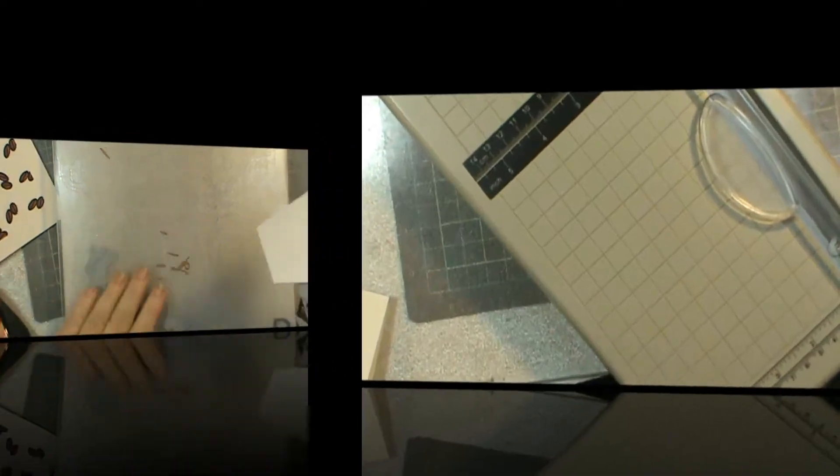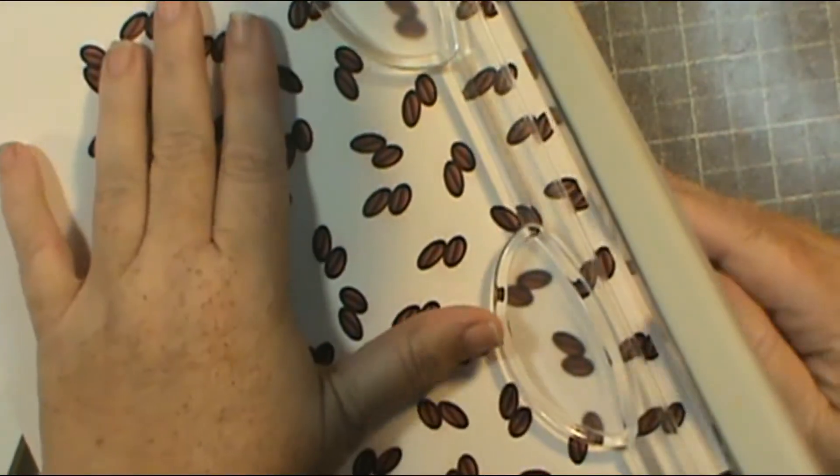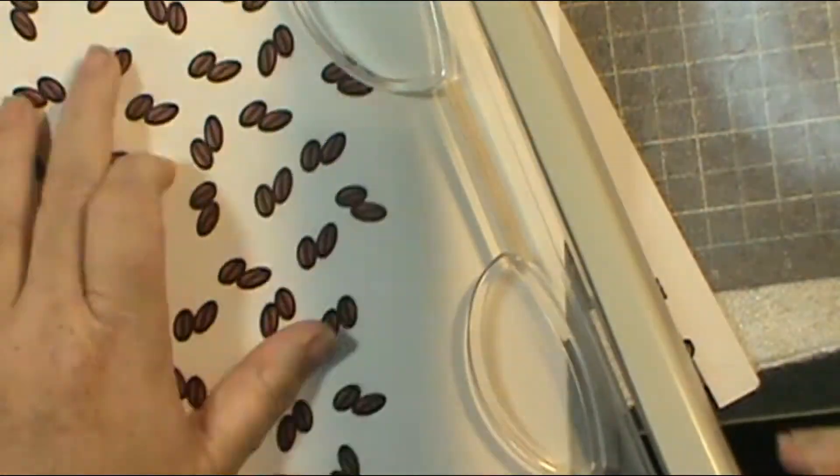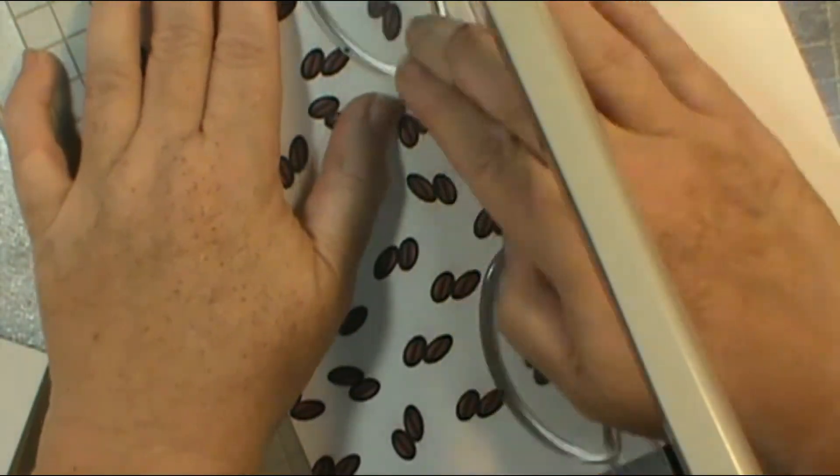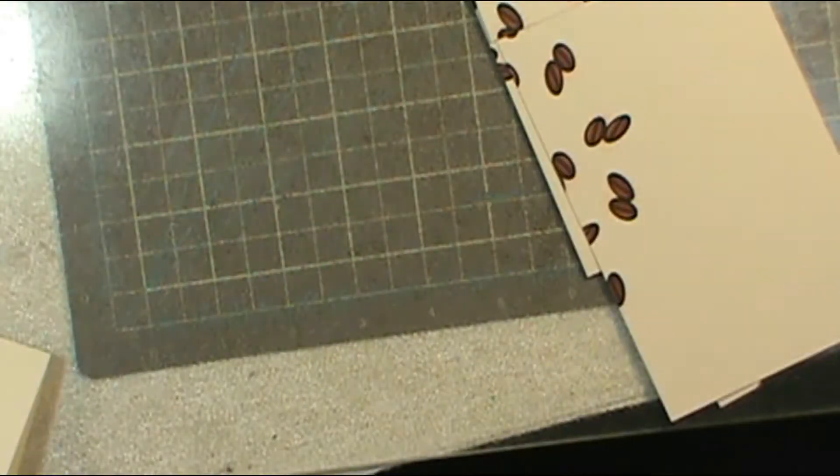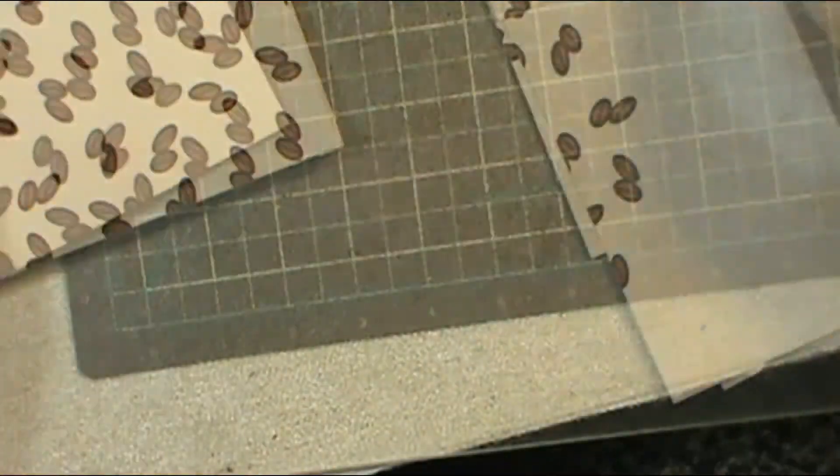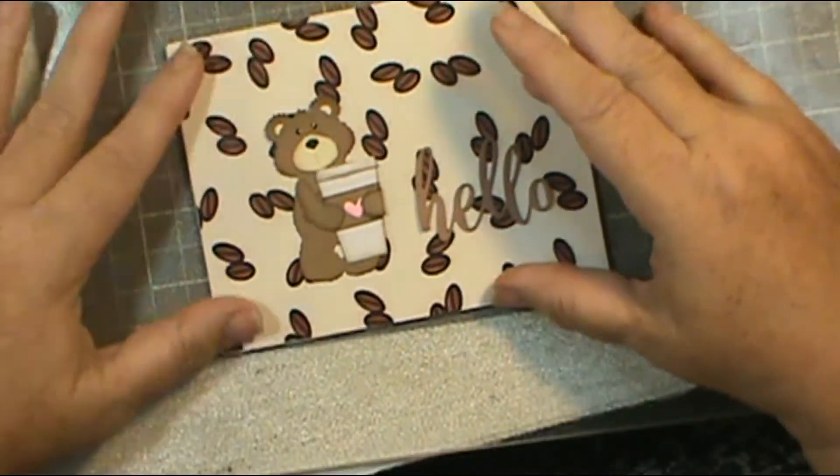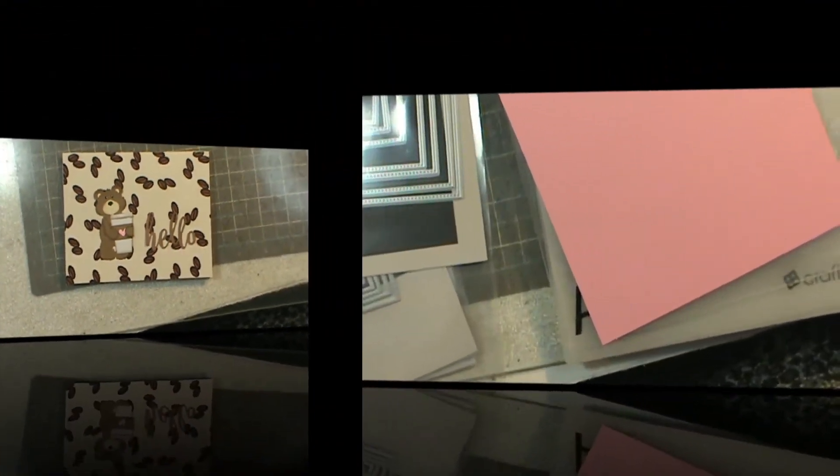I cut out the word hello in the brown. That was just a scrap that I had in my scrap bin. Now I'm just going to trim down the coffee bean paper. I did not try to even fill the entire page because I knew I didn't need that much paper and I didn't want to waste the ink. So I only printed out a little over what I needed.